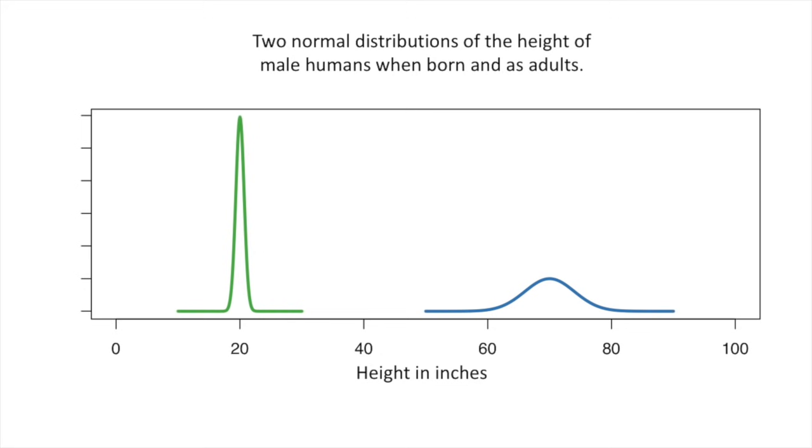Here are two normal distributions of the height of male humans when born and as adults. This is the distribution for the babies, and this is the distribution for the adults. The average baby height is 20 inches. The average adult height is 70 inches. Normal distributions are always centered on the average value.